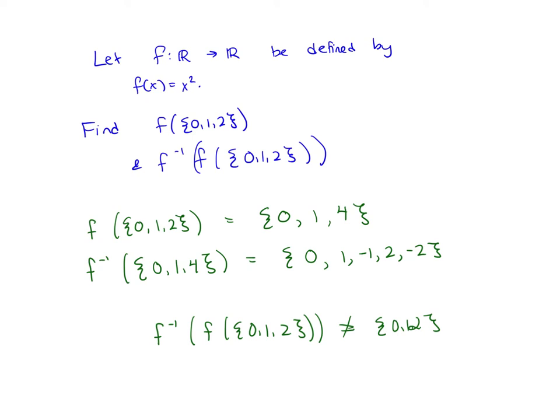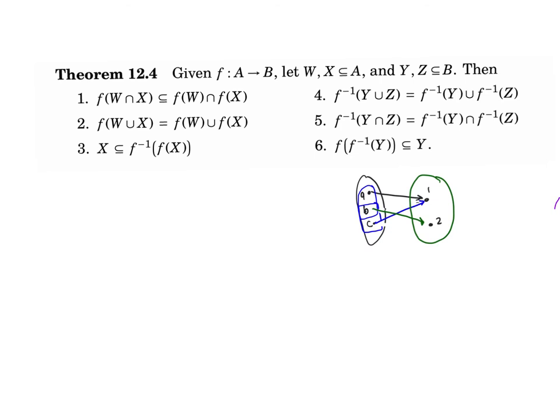So the inverses do cancel each other out, but pre-images don't. So that's kind of an interesting fact about these. But again, if we have a 1-to-1 and onto function, if you have a bijective function, then you should get the property that these cancel out. So that would be a good question to try on your own.